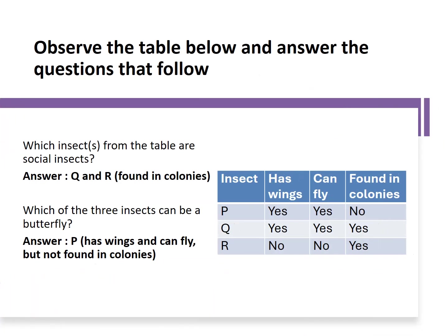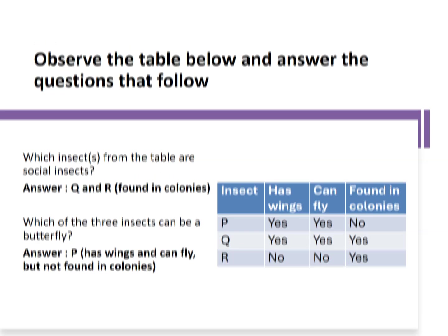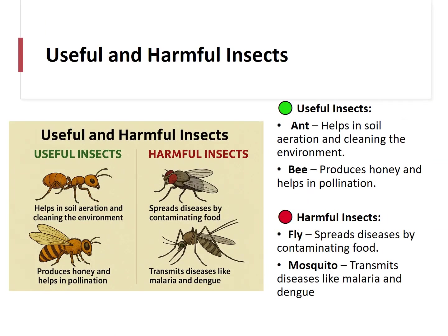Which insects from the table are social insects? The answer is Q and R, as they are found in colonies. Which of the three insects can be a butterfly? The answer is P, which has wings and can fly but is not found in colonies. Useful insects include ants, which help in soil aeration and cleaning the environment, and bees, which produce honey and help in pollination.